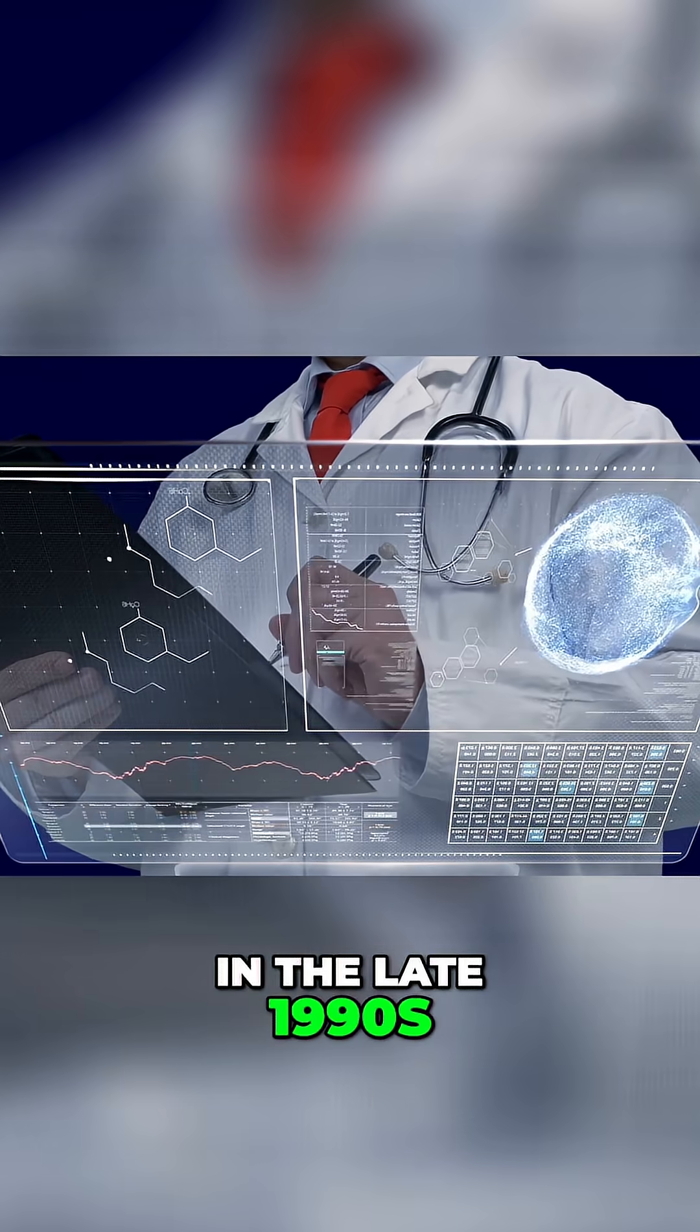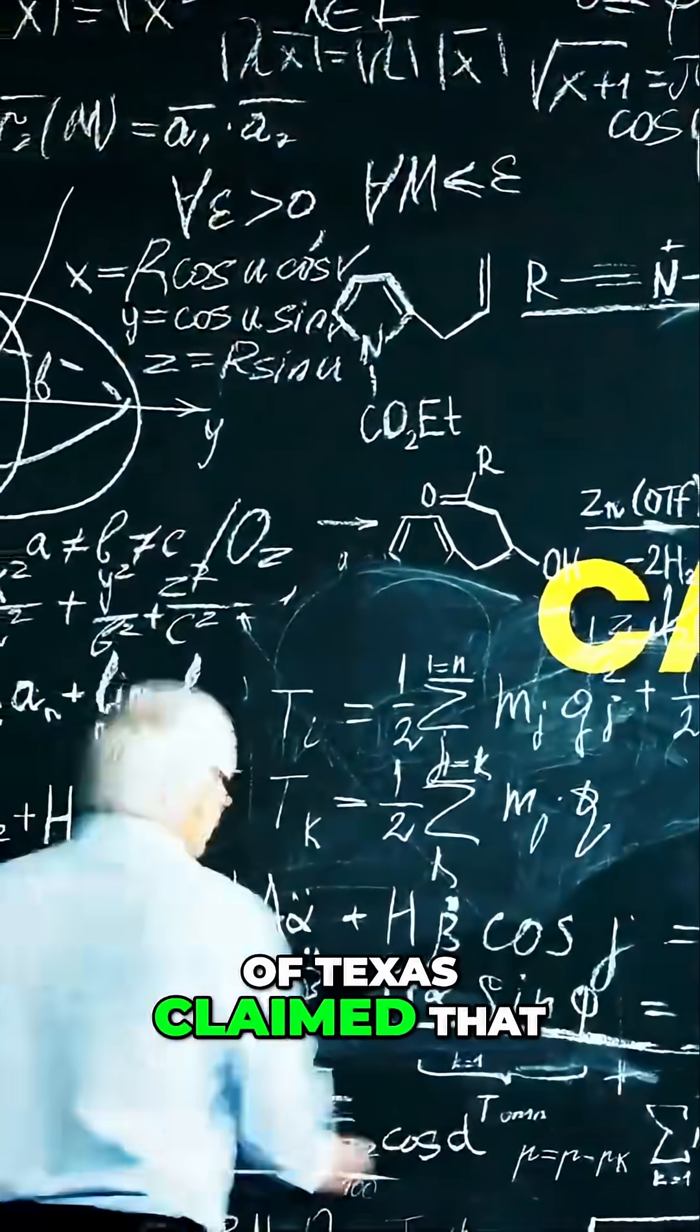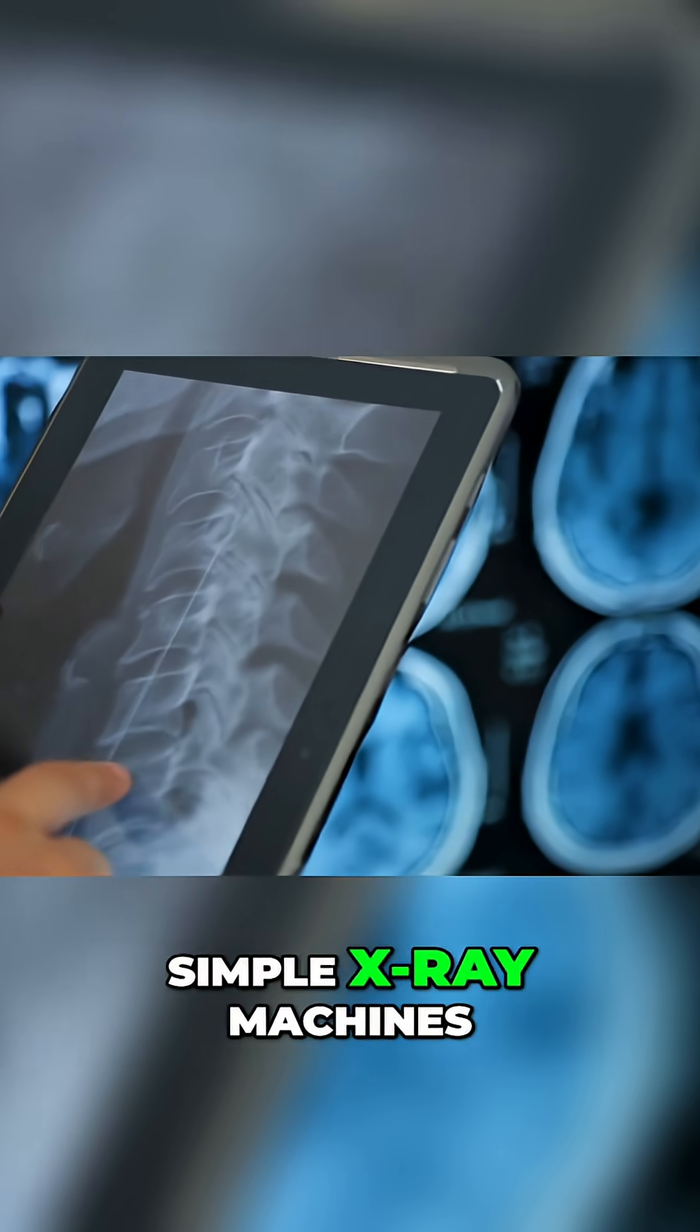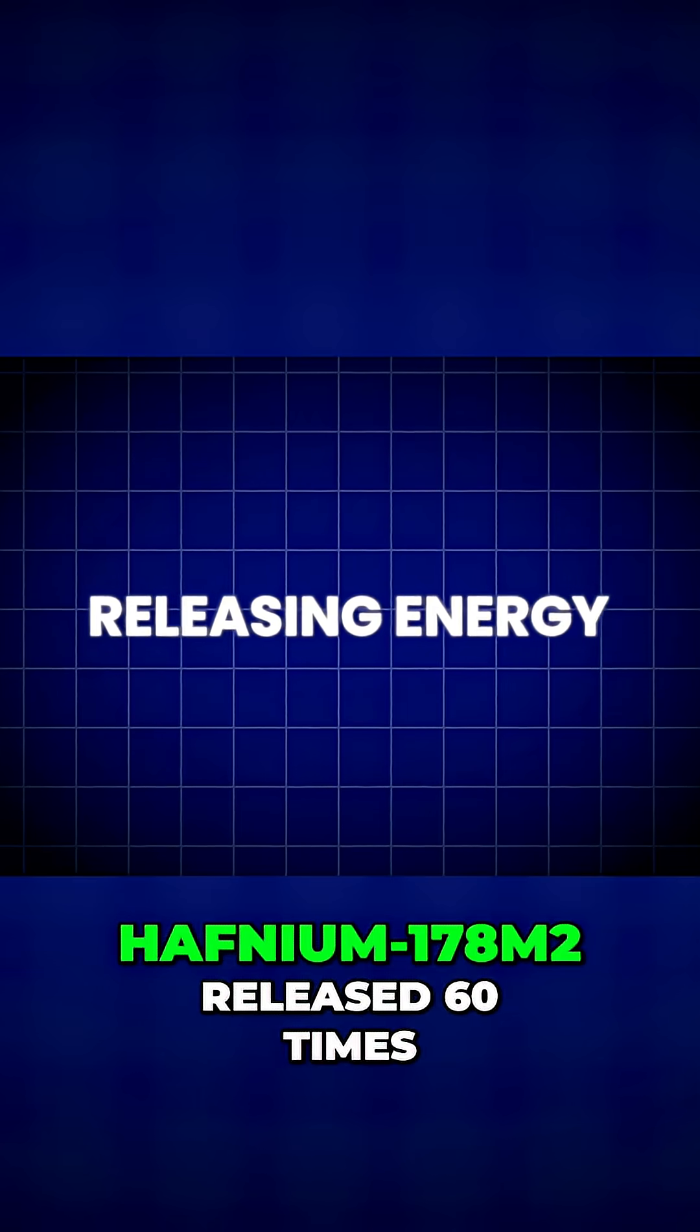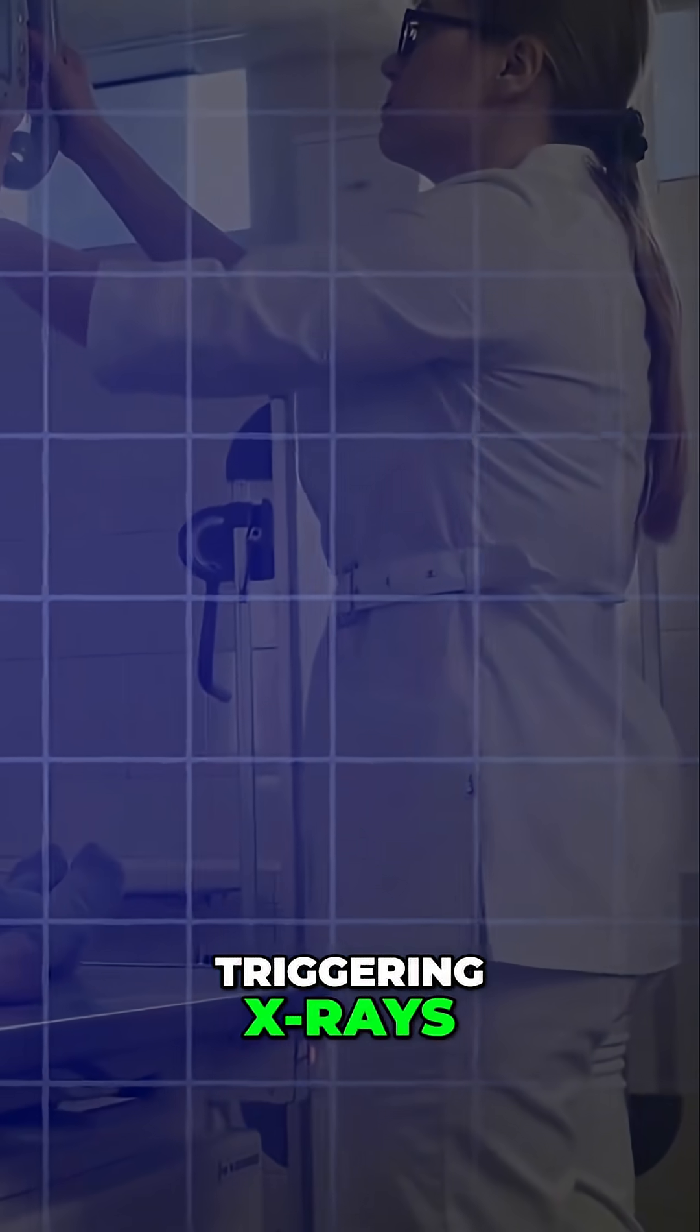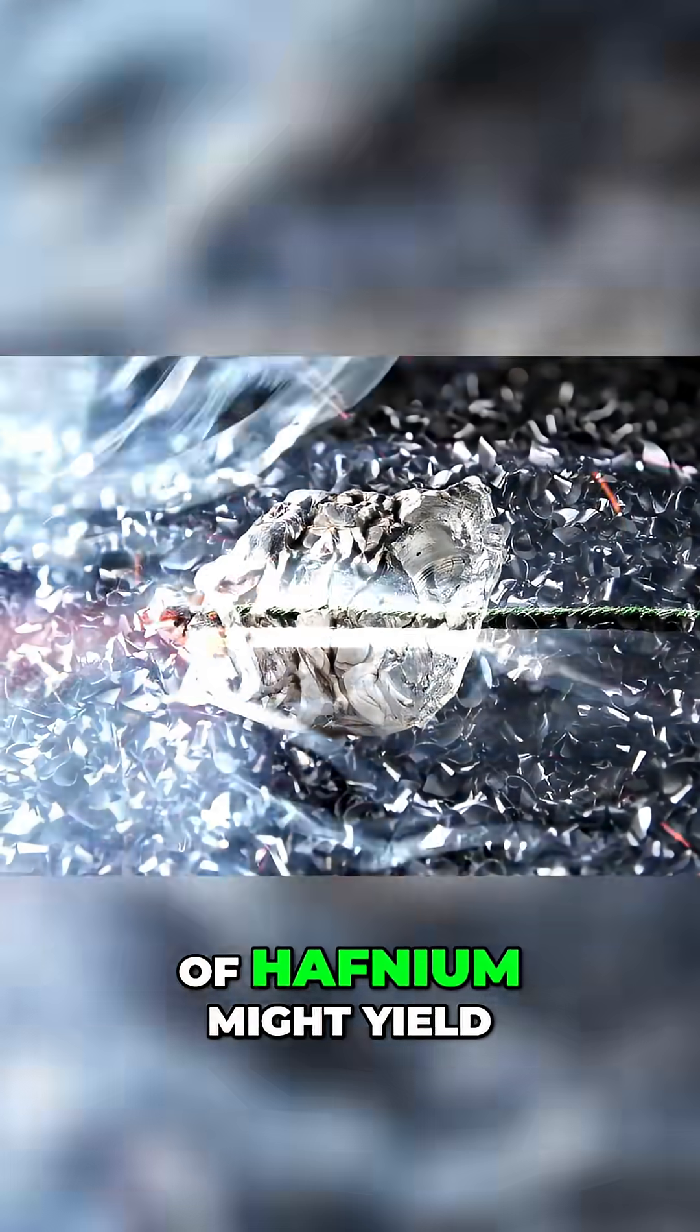In the late 1990s, maverick physicists like Carl Collins at the University of Texas claimed that he could unleash energy from hafnium isomers using simple x-ray machines. Collins claimed that irradiating hafnium-178M2 released 60 times more energy than the triggering x-rays. So if that is true, just a fingernail's worth of hafnium might yield TNT's explosive power.